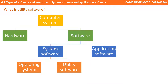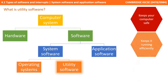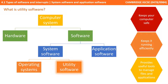Utility system software is a subcategory of system software and often sits alongside your operating system. Lots of operating systems come with utility software pre-installed, but you can also buy them from dedicated vendors. Depending on the definition you look at, some people argue about what qualifies as utility software, but in essence it is designed to keep your computer safe and running efficiently.